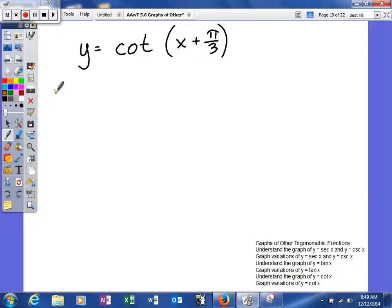So again, there is no amplitude, because it's not a wave function. So we'll start off by calculating our period. And again, it's going to be pi over b for this one. b is going to be one. So we just get a value of pi.